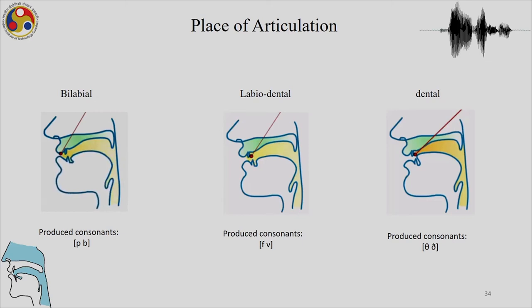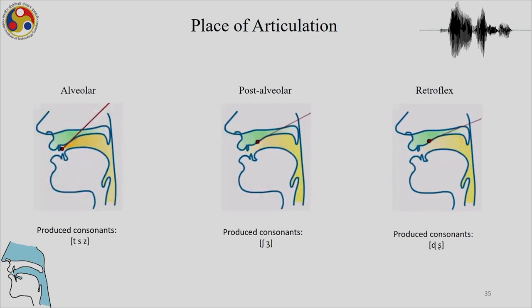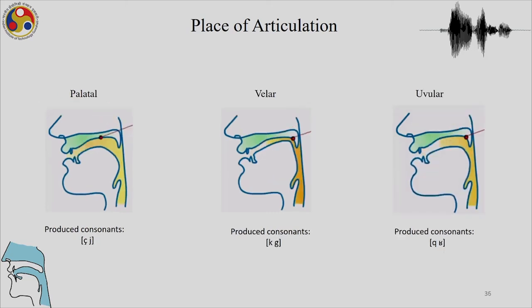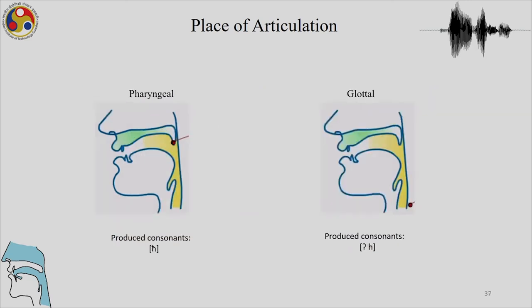For bilabial sounds, the active articulator is the lips; for labiodental, it is the lower lip making contact with the upper teeth; and for dental sounds, it is the tip of the tongue making contact with the upper teeth. We will look at palatal sounds, velar sounds, uvular sounds, pharyngeal sounds, and glottal sounds in the rest of the lecture.